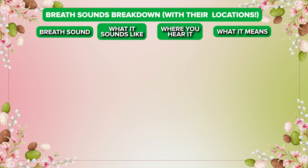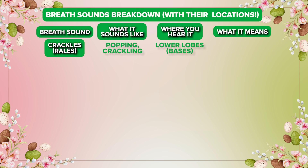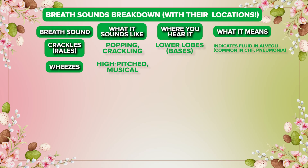Here is the breath sound breakdown — it's really important to know these. First, crackles, also called rales, sound like a popping or crackling. You usually hear them in the lower lobes or base of the lungs. This indicates fluid in the alveoli and is commonly heard in CHF or pneumonia.